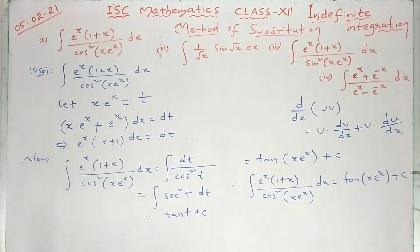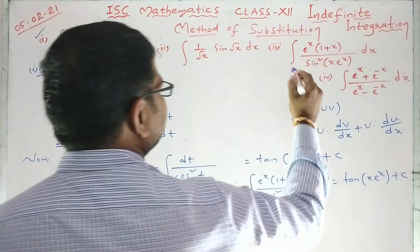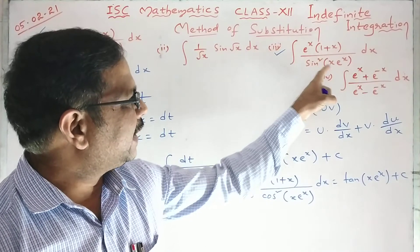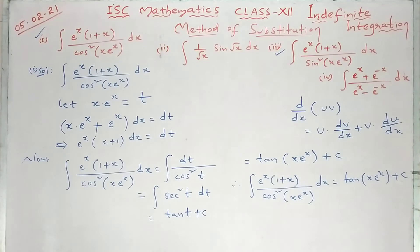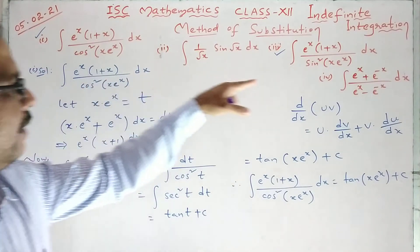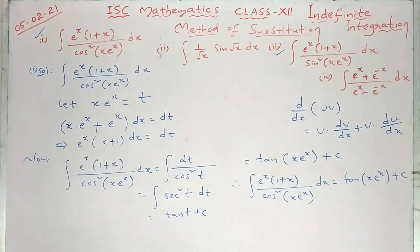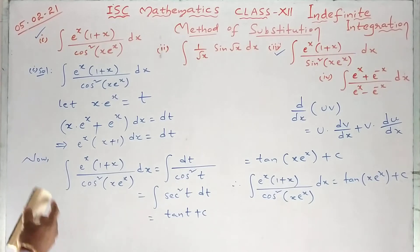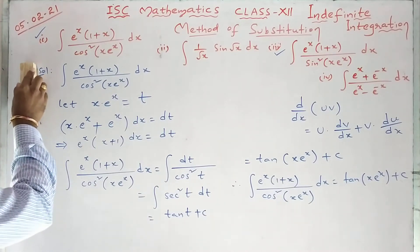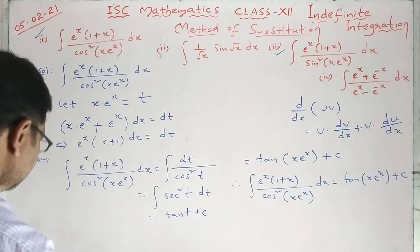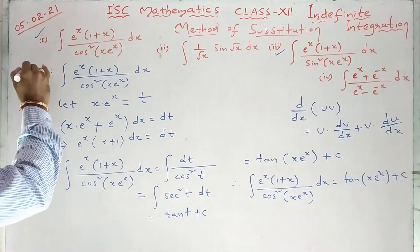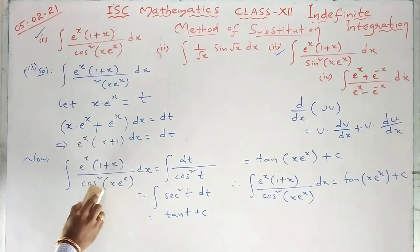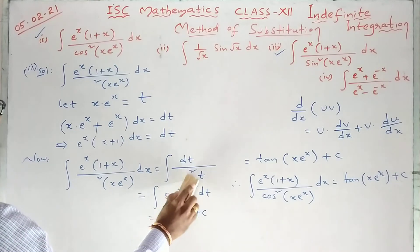The similar problem — as the first one, you have the third question. Here, it is e^x into (1 plus x) by sin squared of (x e^x) dx. Instead of cos squared, we have sin squared — same question. We shall solve that; you do it yourself and check with the solution. Third one: instead of cos squared, we write sin squared. It is fully the same.